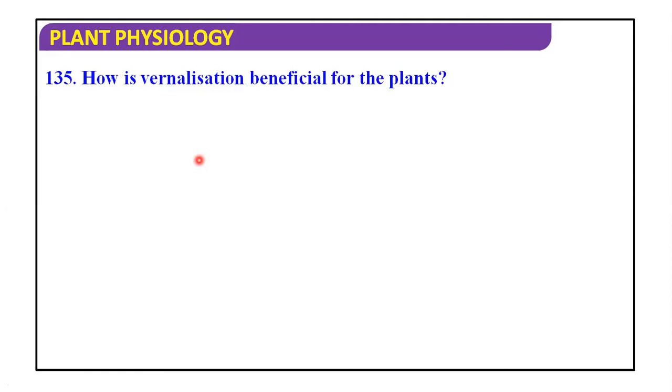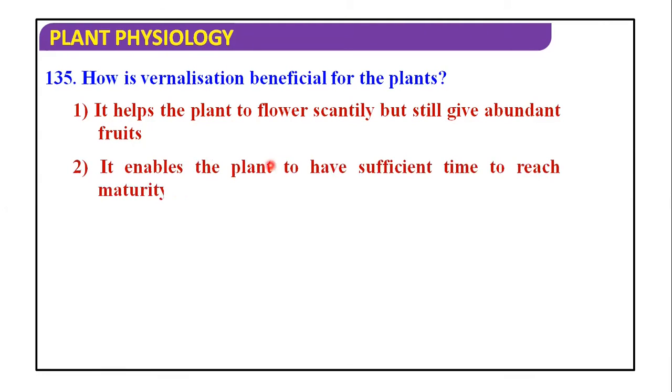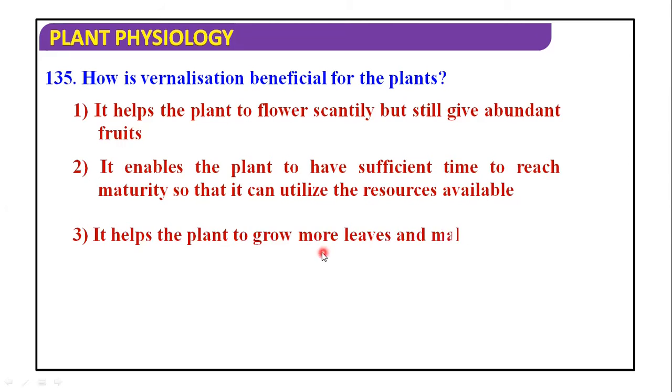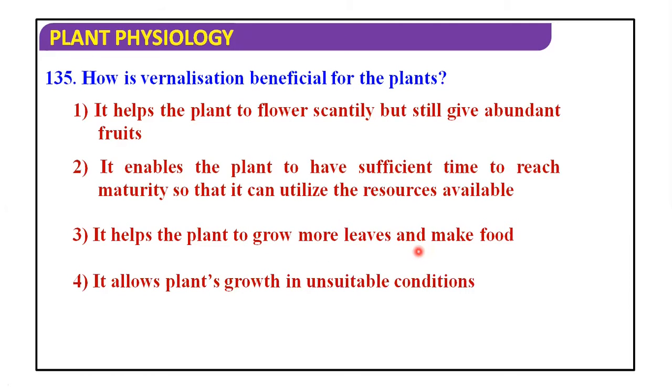How is vernalization beneficial for plants? It helps the plant to flower scantily but still give abundant fruit. It enables the plant to have sufficient time to reach maturity so that it can utilize the resources available. It helps the plant to grow more leaves and make food. It allows plant growth in unsuitable conditions. So the answer is it enables the plant to have sufficient time to reach maturity so that it can utilize the resources available.